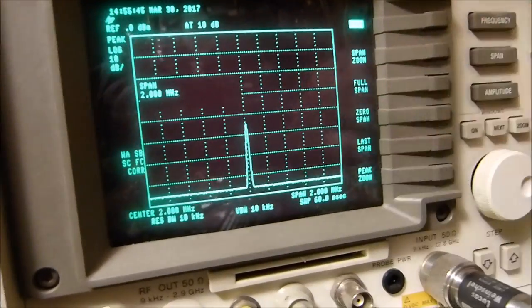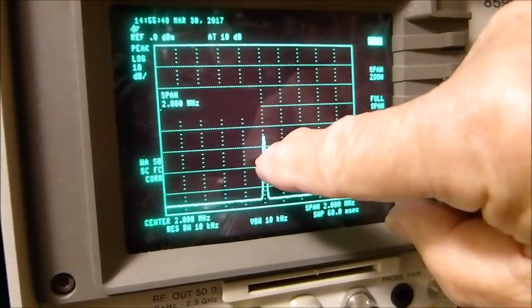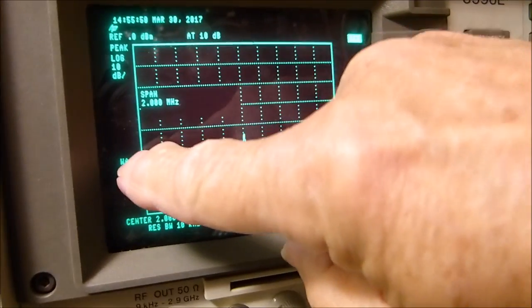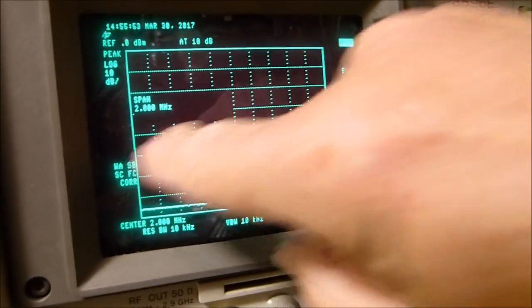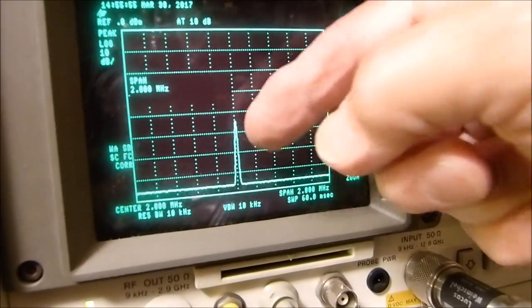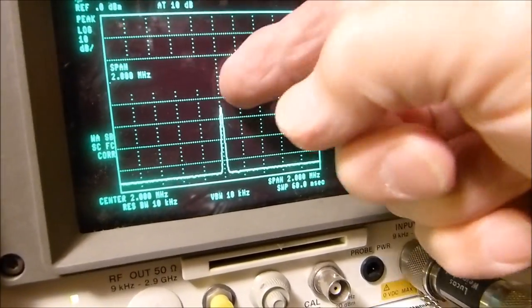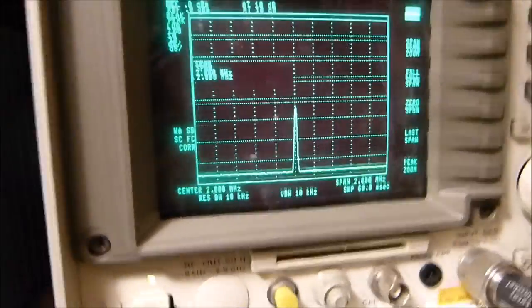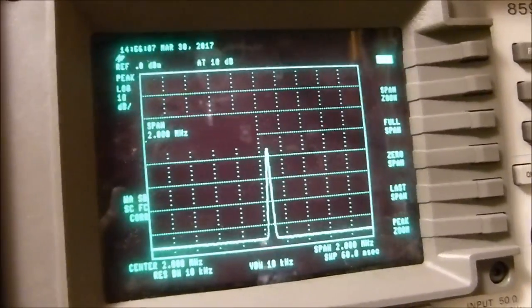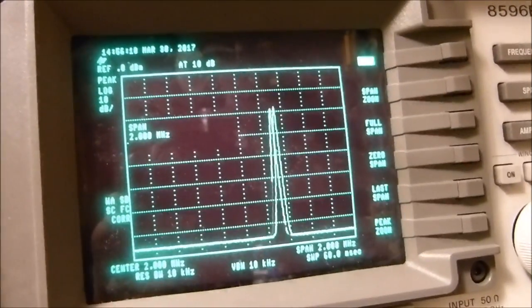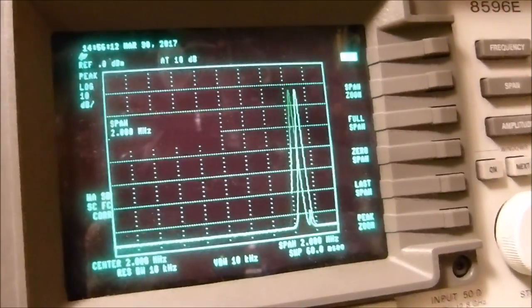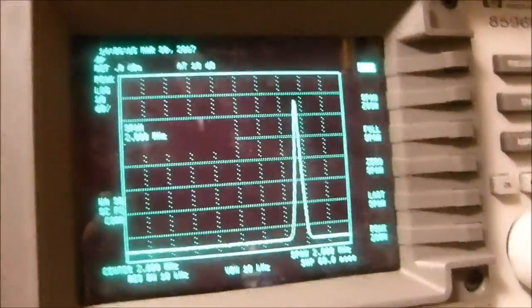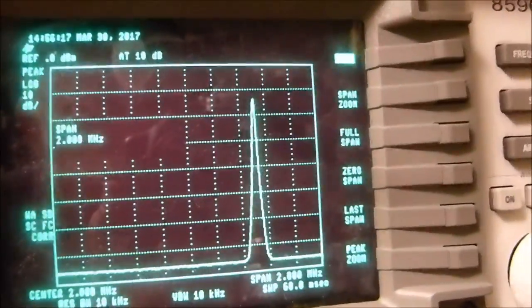This one's set up for 2 megahertz, and the span is 2 megahertz, I'm sorry. So it'll go from 1 to 3 megahertz. At 2.6 megahertz, it's down 10, 20, 30, a little about 35 dB. And as I vary the frequency, I'm going to vary it down here in 10 kilohertz at a time.